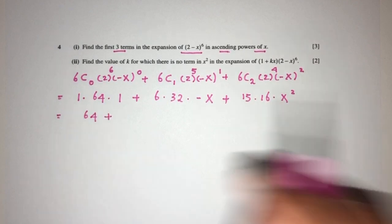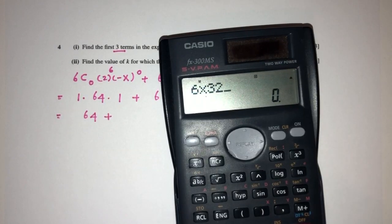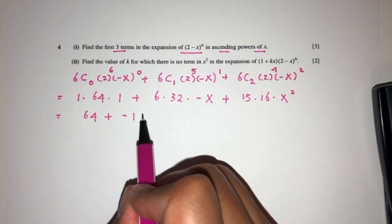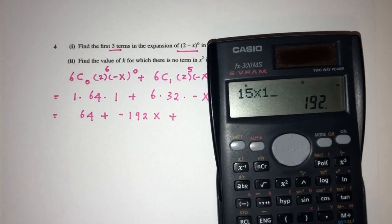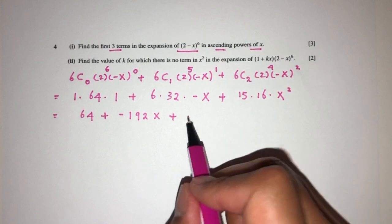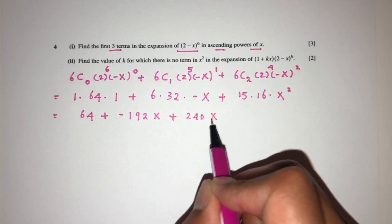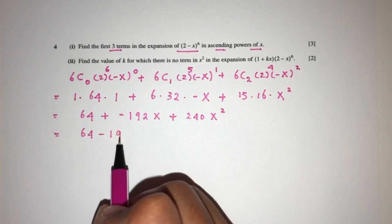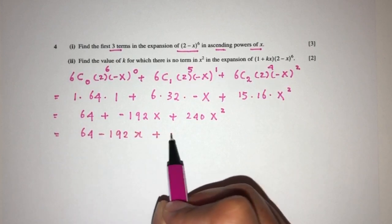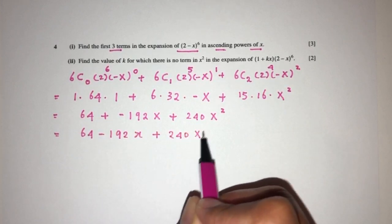That'll be 64 plus 6 times 32 will be minus 192x plus 15 times 16. That should be 240x squared. So the first three terms will be 64 minus 192x plus 240x squared.